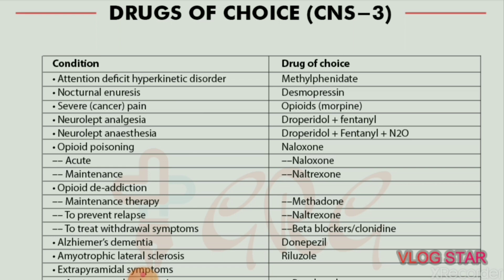Neuroleptic analgesia — drug of choice is droperidol plus fentanyl. Neurolept anaesthesia — drug of choice is droperidol plus fentanyl plus N2O. Opioid poisoning — drug of choice is naloxone. The antidote of opioid poisoning is naloxone.